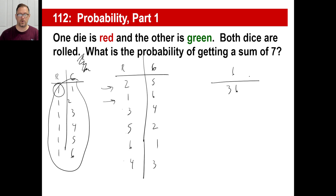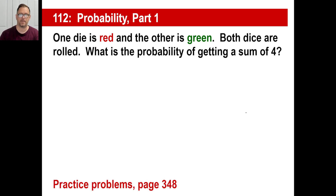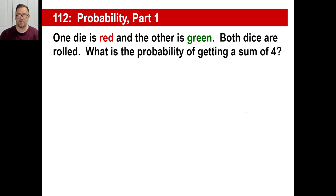So six over 36 reduced is one out of six chances. That's your probability of rolling a seven. Now, one die is red and one is green — both dice are rolled. What's the probability of getting a sum of four?